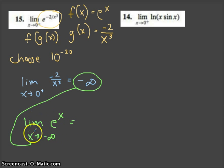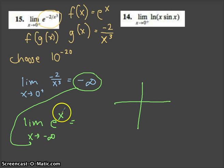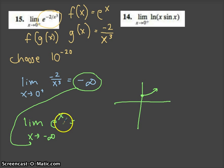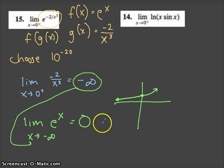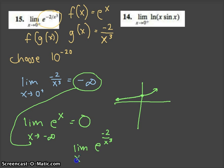You've got to know your graphs. When x is 0, e^x is 1. When x is positive, it goes up. When x is negative — and we're concerned about what happens at negative infinity — e^x can never equal 0 and will never be negative, but it will approach 0. Therefore, the limit of e to the negative 2 over x cubed, as x approaches 0 from the right, is 0.